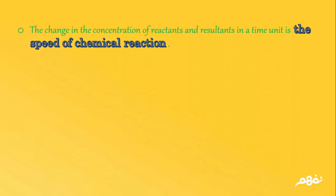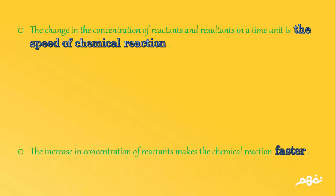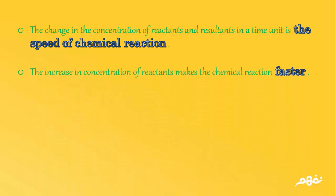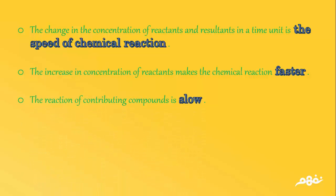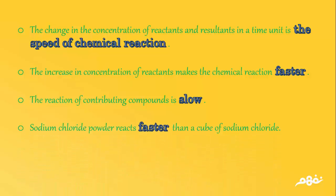Number 6: The change in the concentration of reactants and resultants in a time unit is the speed of chemical reaction. Number 7: The increase in concentration of reactants makes the chemical reaction faster. Number 8: The reaction of covalent compounds is slow. Number 9: Sodium chloride powder reacts faster than a cube of sodium chloride.